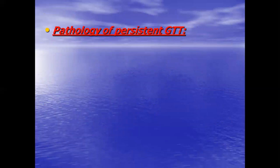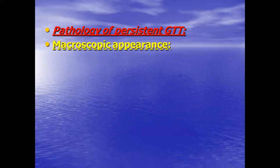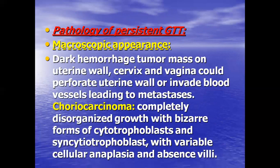In the pathology of persistent gestational trophoblastic tumor, macroscopic evidence shows a dark hemorrhagic tumor mass on the uterine wall, cervix, and vagina, which may erode the uterine wall or invade blood vessels leading to metastasis. Under the microscope, choriocarcinoma shows completely disorganized growth with bizarre forms of cytotrophoblast and syncytiotrophoblast, variable cellular anaplasia, and absence of villi.